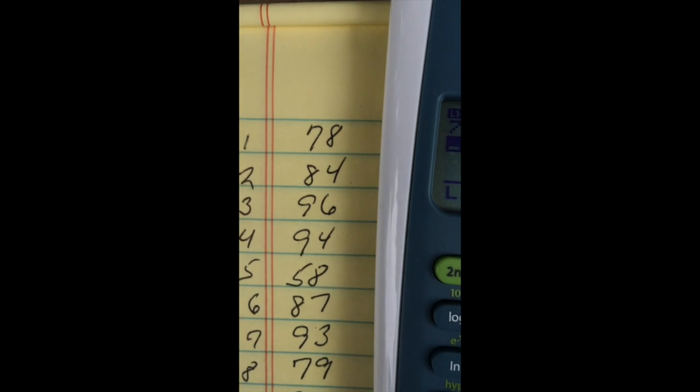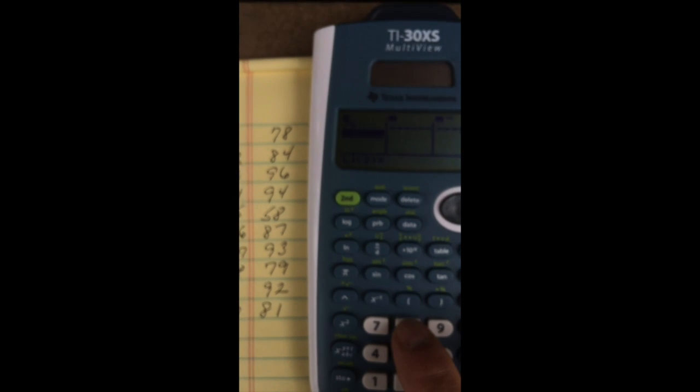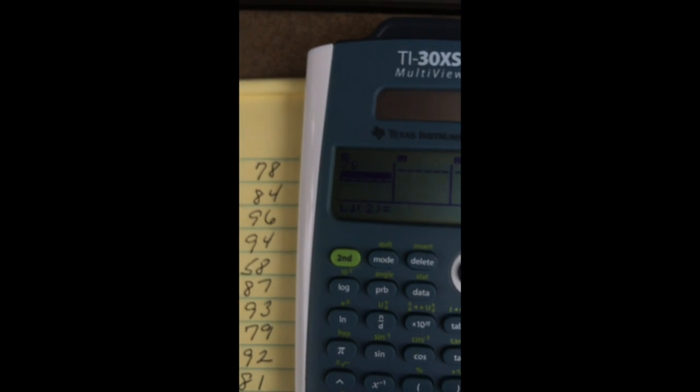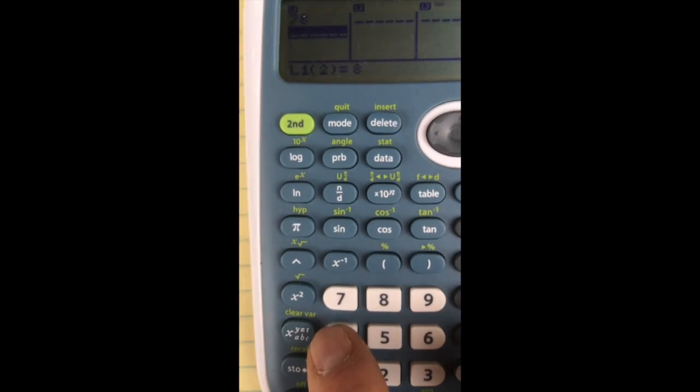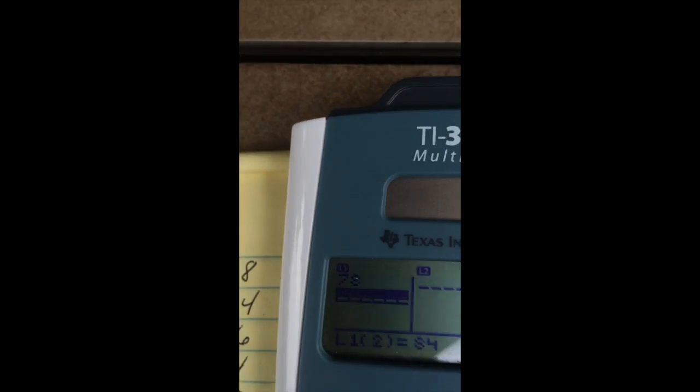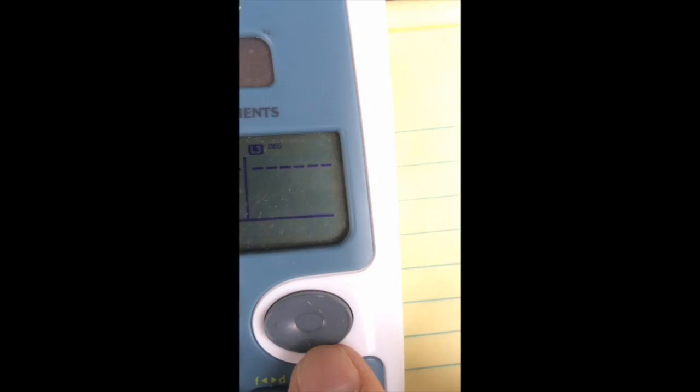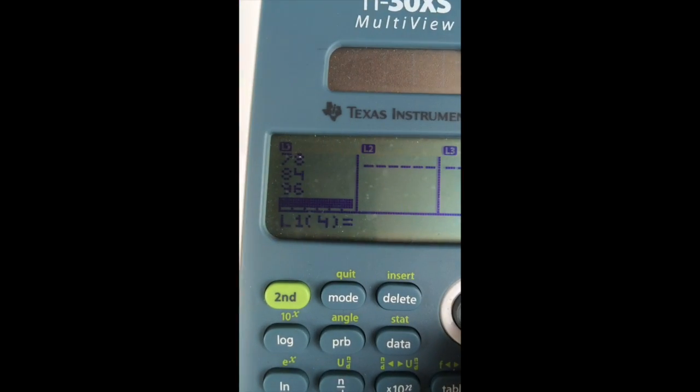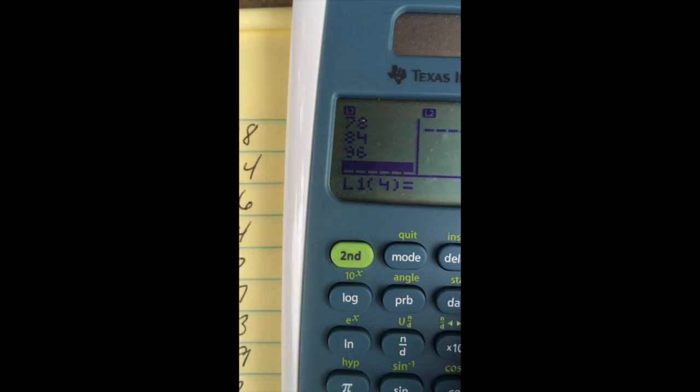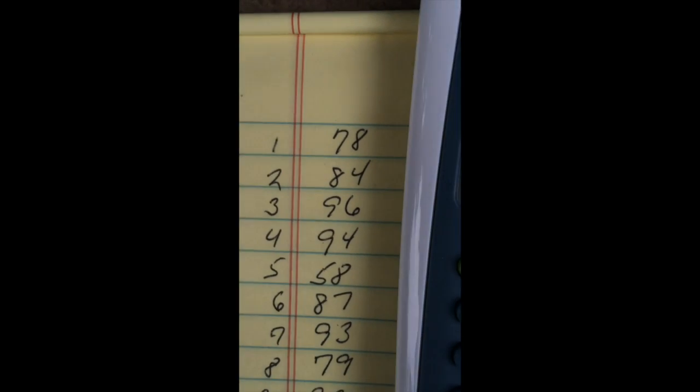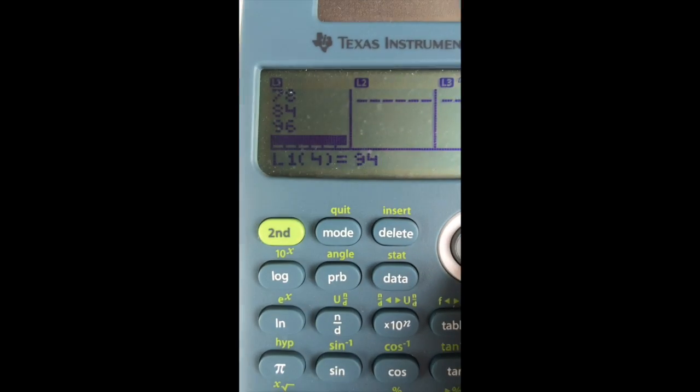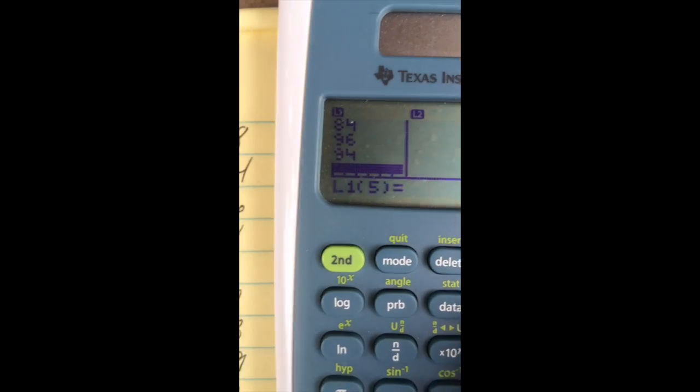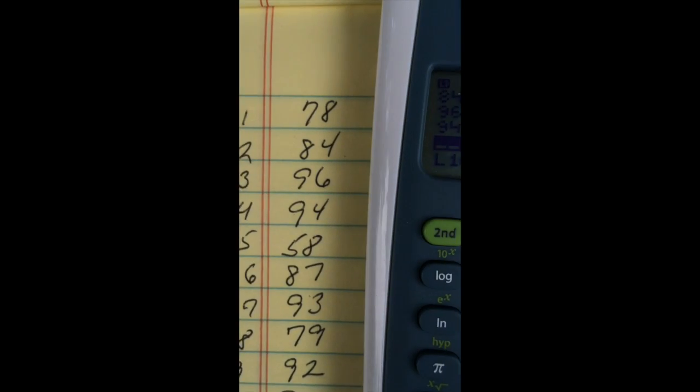And now I'm going to hit the others. So I've got 84, and I could also just hit the down arrow, 96, 94, 58, 88.